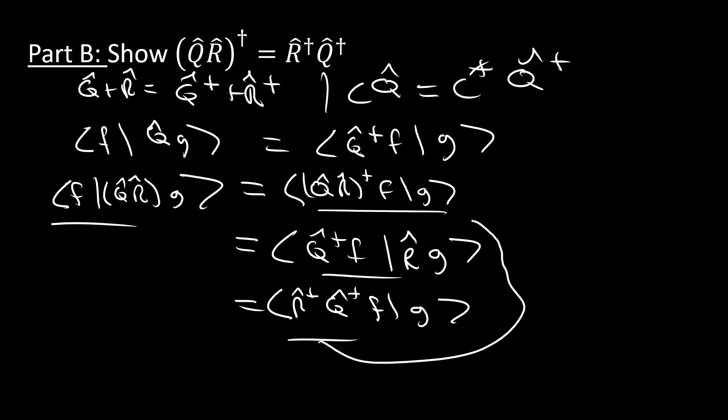Oh wait, hold on a minute. This shows exactly what we want to show. So the Hermitian conjugate of the product q hat r hat is equal to r hat dagger q hat dagger, just in reversed order. That's part B. It's a little bit tricky if you're not familiar with or you're not comfortable with Hermitians and that kind of stuff yet. But it can be done. Let's move on to part C.